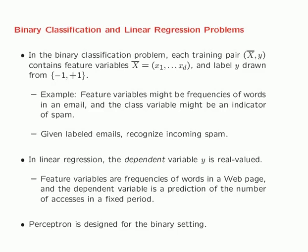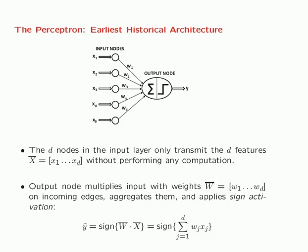The perceptron is designed for the binary settings, so that is what we are going to look at in this video. The perceptron is an architecture with considerable historical significance — it is what started off neural networks from a practical point of view. It was proposed by Rosenblatt in 1958.